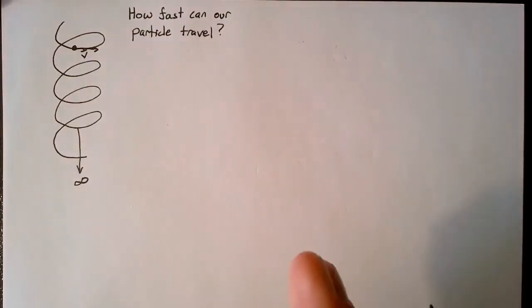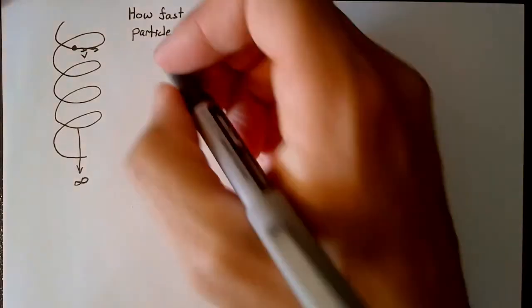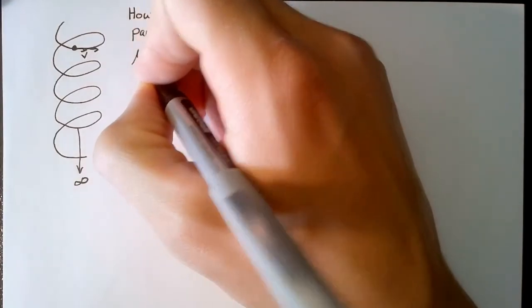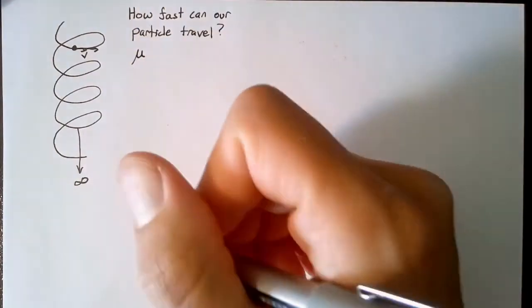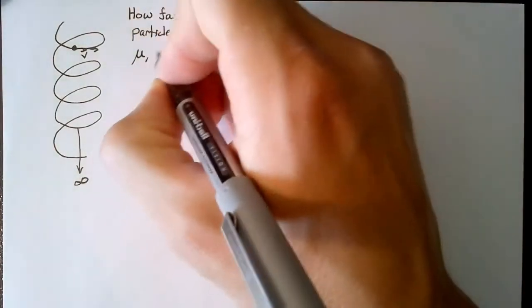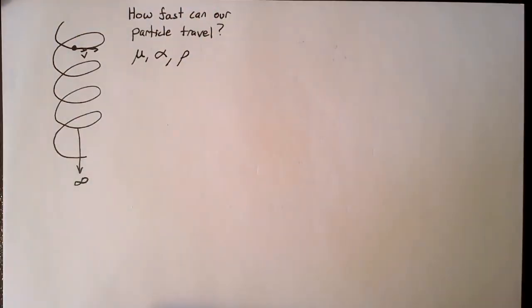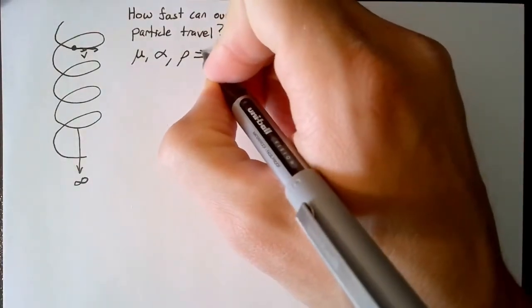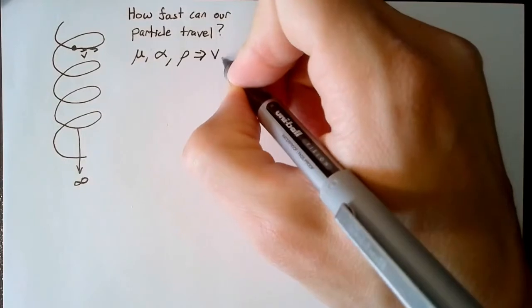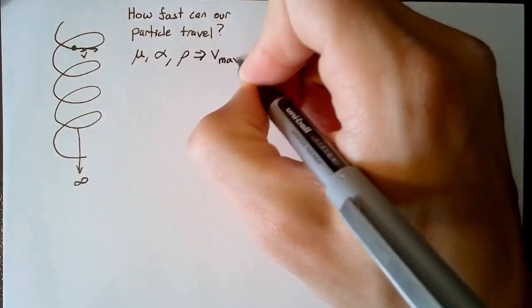We have three parameters that we're interested in. The first is mu, which is the coefficient of friction. The second is the grade of the slope, which I'm going to call alpha. The third is the radius of curvature, which I'm going to call rho. Using these three, we should be able to find some maximum velocity for our particle.